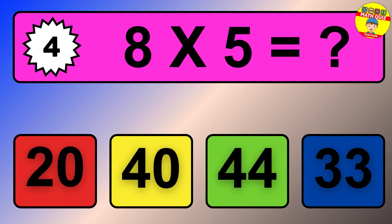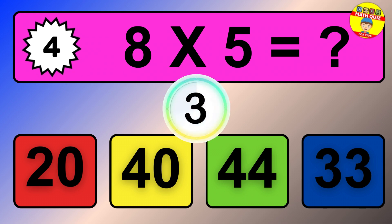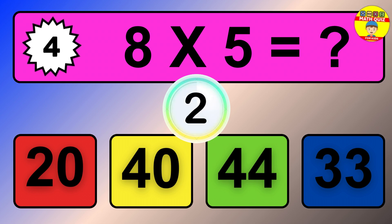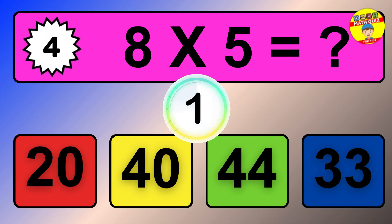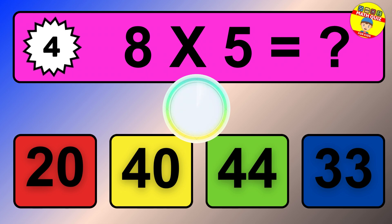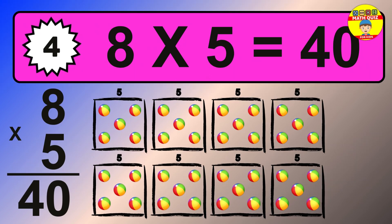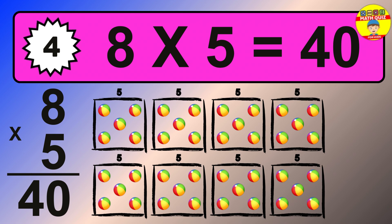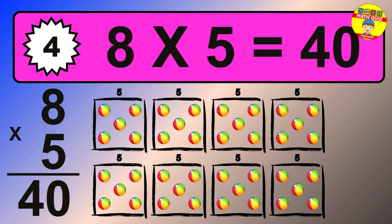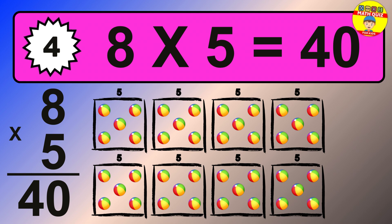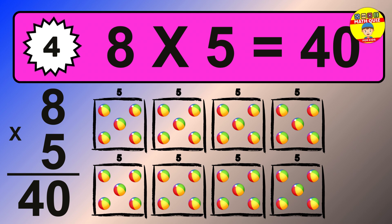Question 4. 8 times 5 equals what? The answer is 8 times 5 is 40. To calculate, we have 8 groups with 5 balls each one. So how many balls do we have? 40 balls.